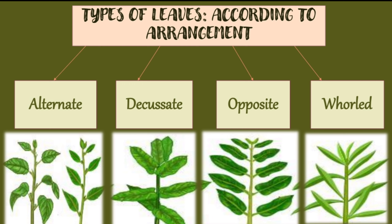According to the arrangement of leaves on the stem, there are four types: alternate — leaves are alternately arranged on the stem; decussate; opposite — leaves are present on opposite sides; and whorled — leaves are present on all four sides of the stem.